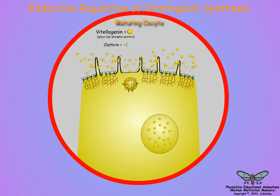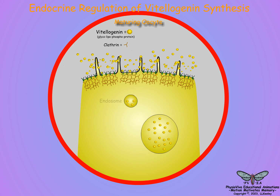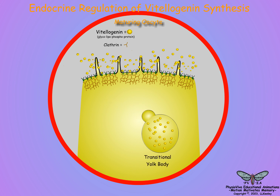During vitalogenesis, clathrin coating the cytoplasmic side of the receptor pit produces a coated vesicle that carries the receptor-bound vitalogenin into the maturing oocyte. The clathrin coat dissociates from the vesicle along with the receptors and recycles to the oocyte surface to resume further vitalogenin uptake. The resulting vitalogenin-containing endosomes coalesce with transitional yolk bodies to form mature yolk bodies containing vitalin, the final processed yolk protein. Part 2 of this video series will discuss the factors and hormones that regulate insect reproduction.